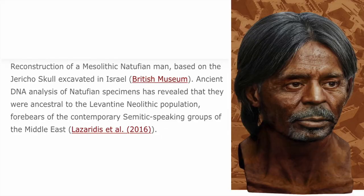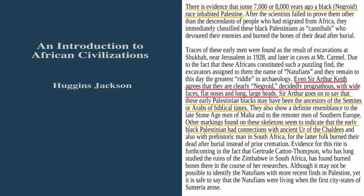Let's read descriptions of proto-Semites — how do biologists describe the physical appearance of early Semitic populations such as Akkadians, Chaldeans, Elamites, Arabians, etc. Beginning first with the Natufians, the ancestors of Semites. According to the book titled An Introduction to African Civilizations, there is evidence that some 7,000 or 8,000 years ago a black negroid race inhabited Palestine. Even Sir Arthur Keith agrees that they are clearly negroid, distinctly prognathous, with wide faces, flat noses, and long, large heads.